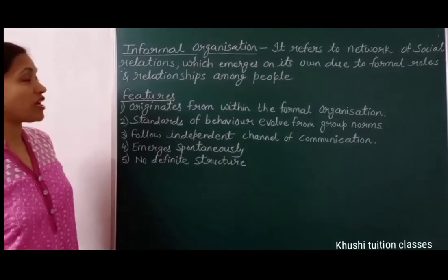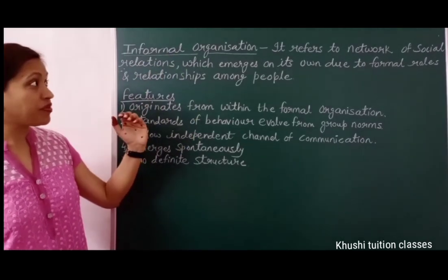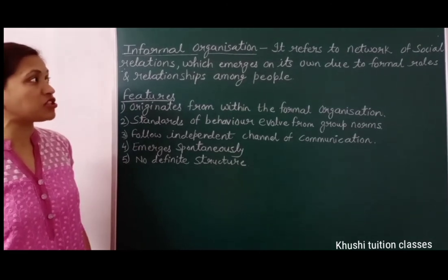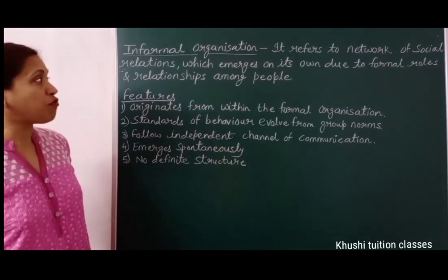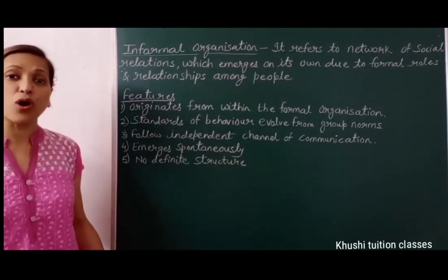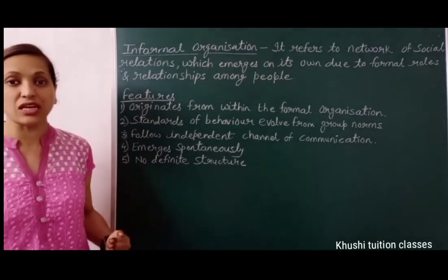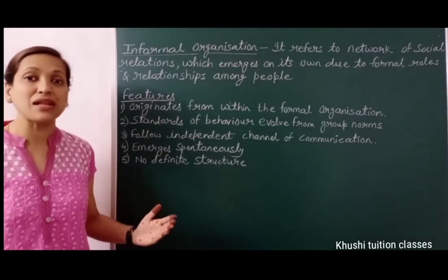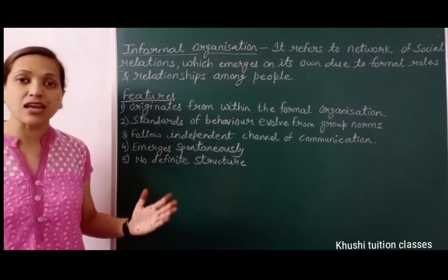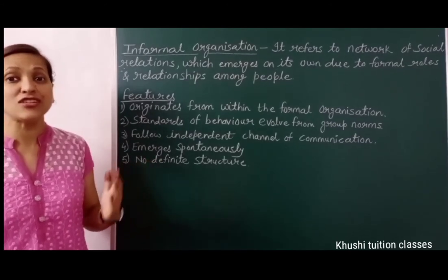The second type of organization on the basis of relationship is informal organization. It refers to the network of social relations which emerges on its own due to formal roles and relationships among people. In any formal organization, informal groups create themselves automatically when employees meet each other and work together, forming friend circles.